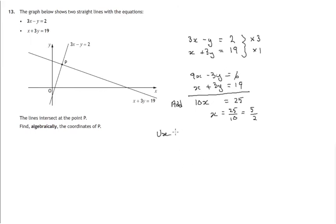And then to get y, let's use 3x minus y equals 2. So we get 3 times 5 over 2 minus y equals 2. So that's 3 lots of 5 halves. That's 15 halves minus y equals 2. So let's add y to both sides. 15 over 2 will be 2. That's 4 halves plus y. And let's take away 4 halves from both sides. So we've got 15 halves. Take away 4 halves to get y. That's 11 halves.